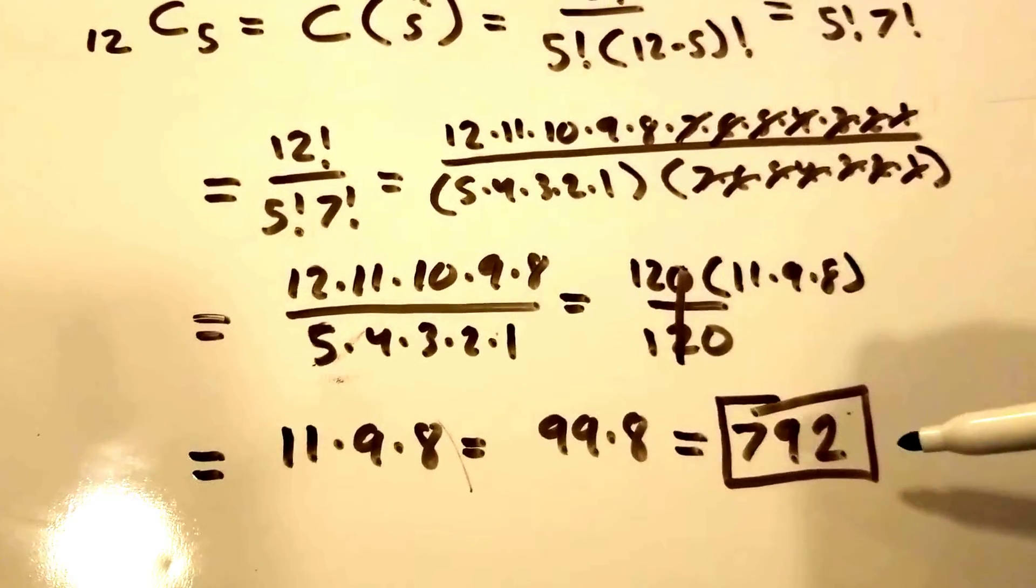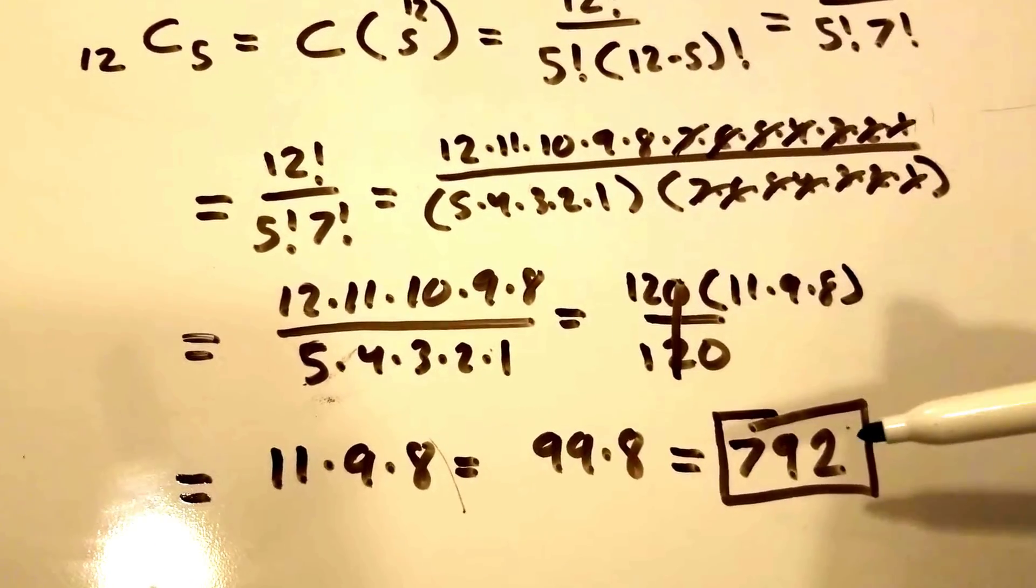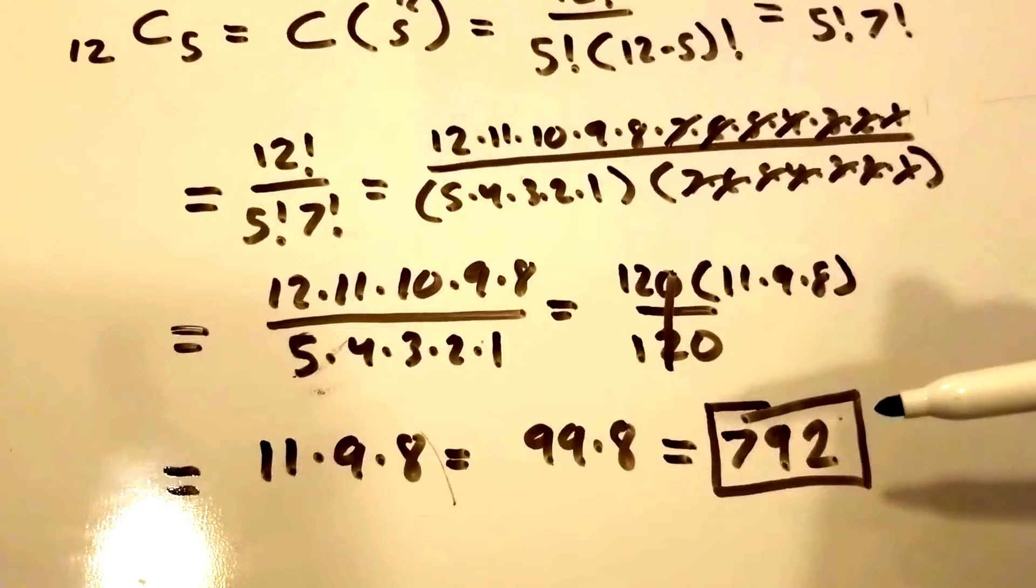That's the number of ways a committee can be formed of five people from a group of 12 people.